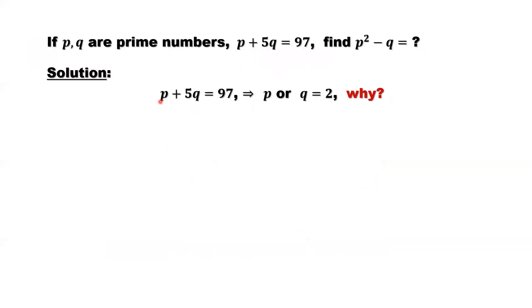Look at the given condition. We know that p plus 5q equals 97. We claim p or q, at least one of them, is 2. Why?